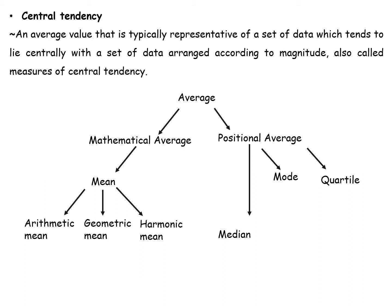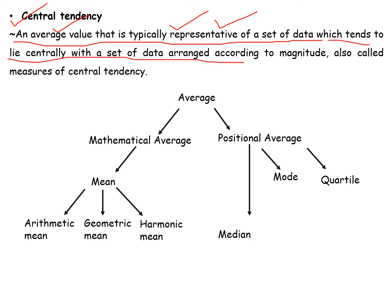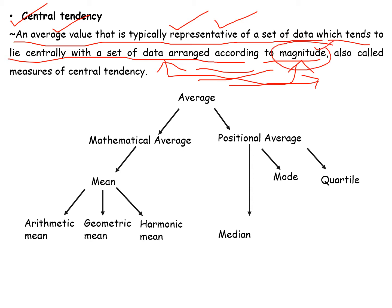What is Central Tendency? Central tendency is an average value that typically represents a set of data. In research, we collect data and take a sample as the true representation, to find research results. The average value tends to lie centrally within a set of data arranged according to magnitude — either ascending or descending order — but the data set will be lying centrally.